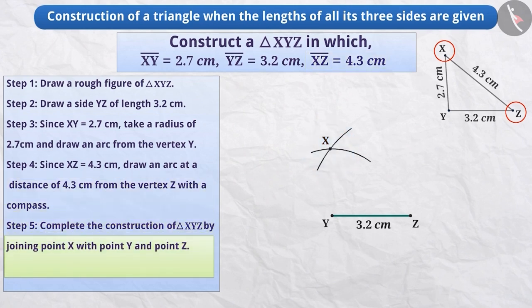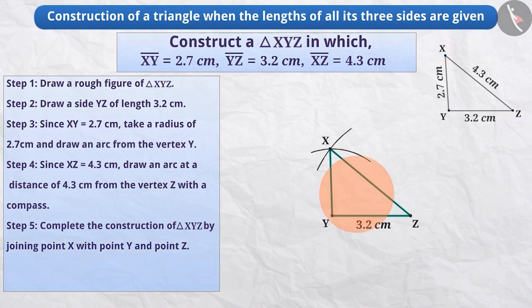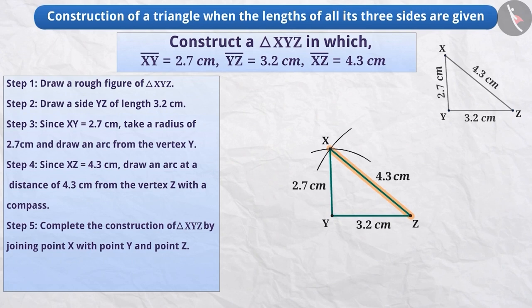Step 5. Now, we will join the point X with point Y and point Z, and from this we will get triangle XYZ. In this way, we have constructed triangle XYZ. Here, the side XY is equal to 2.7 cm, the side YZ is equal to 3.2 cm, and the side ZX is equal to 4.3 cm.